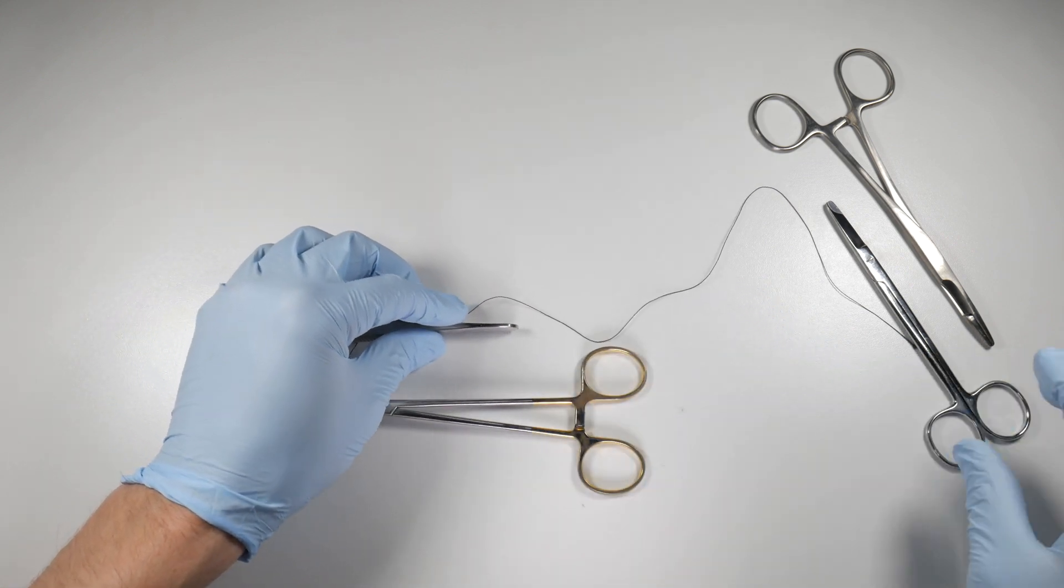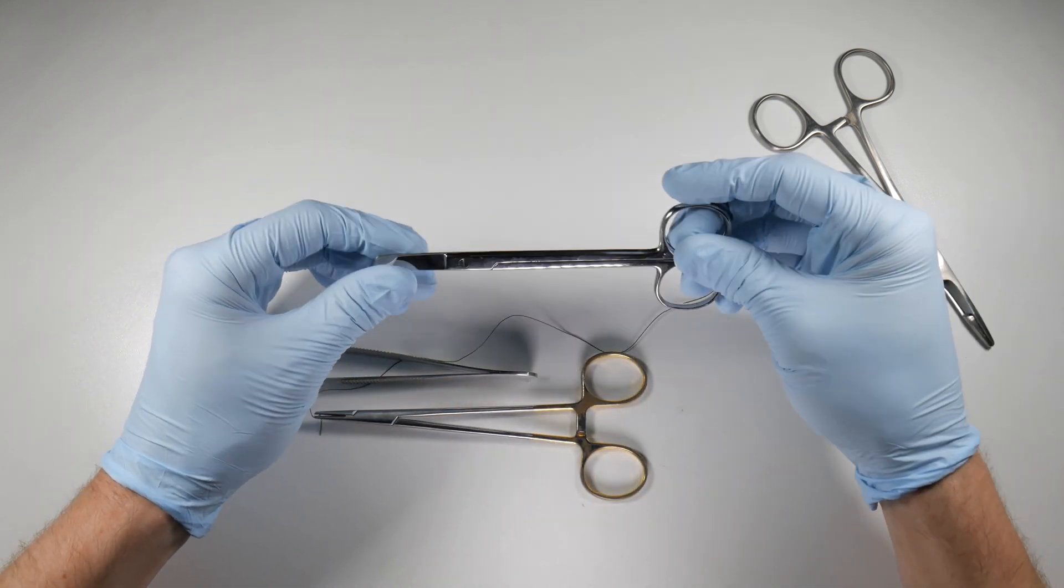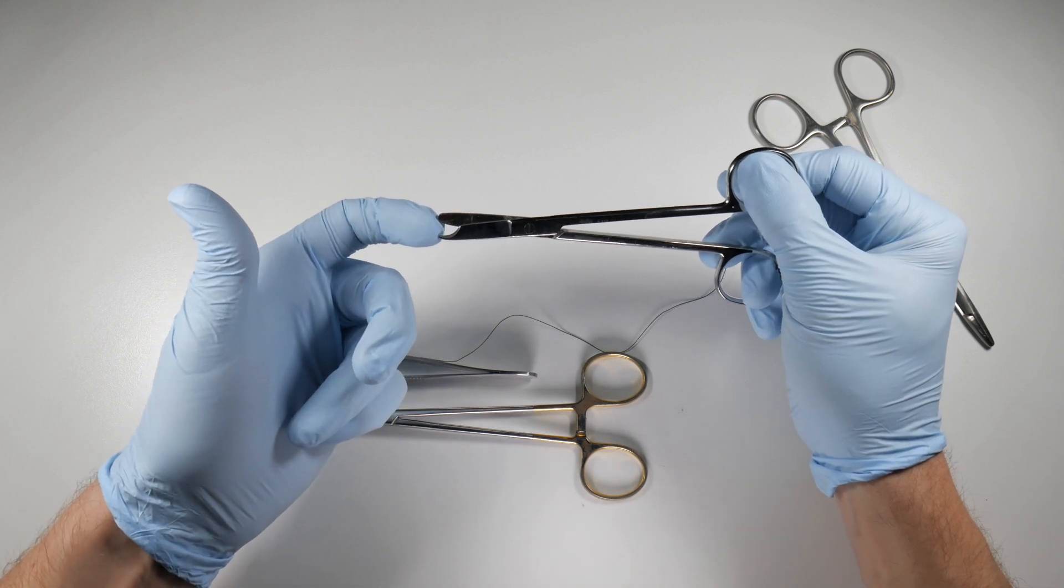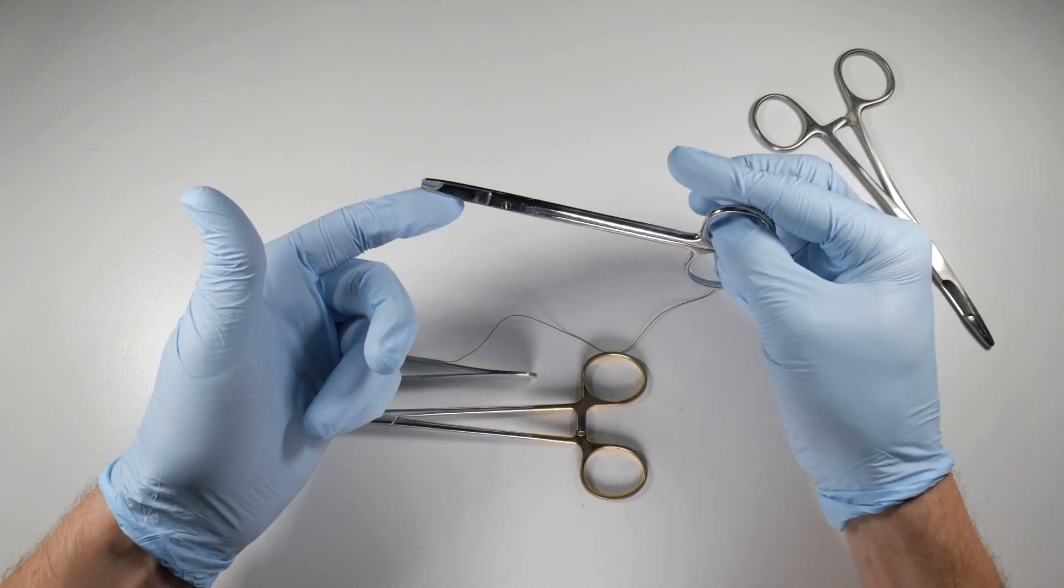Now we also have our suture removal scissors, which you'll use in cases where you've used a non-absorbable suture. It's got that little concavity there that's going to slip under the suture and snip it away.